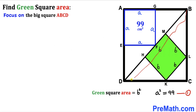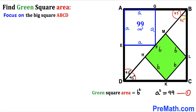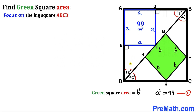BD is the diagonal of the big square, so it divides each 90° corner angle into two 45° angles. Focusing on the blue square, the angle at E (and at G) is 90°. In triangle DEF, the angles sum to 180°: we have 90° and 45°, so the remaining angle must also be 45°.